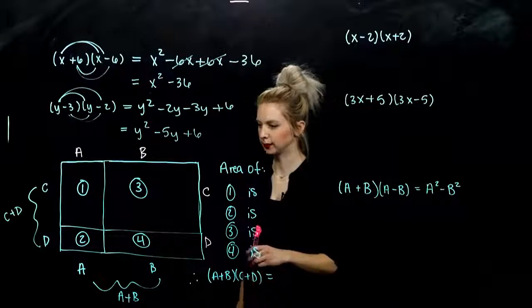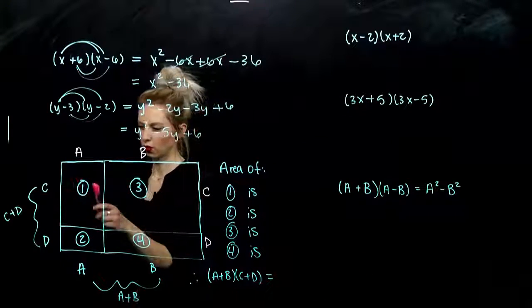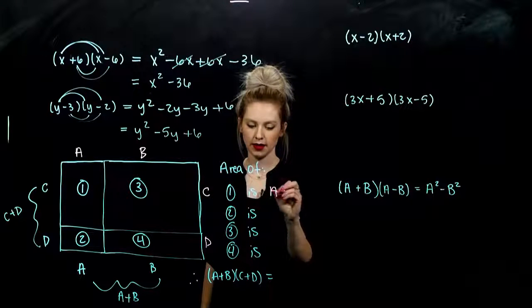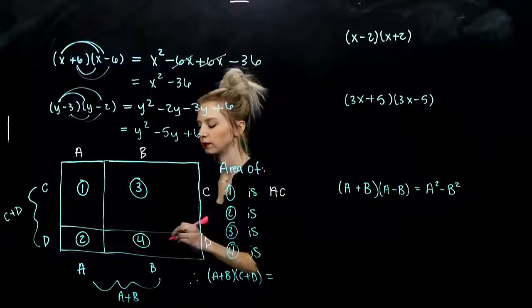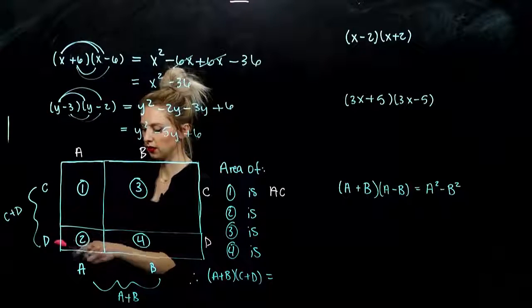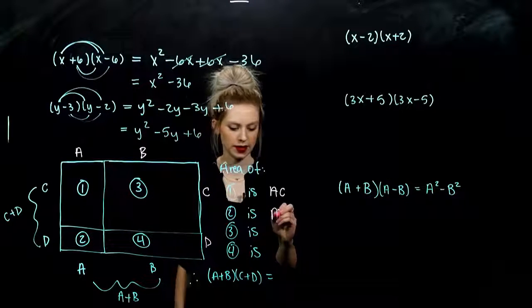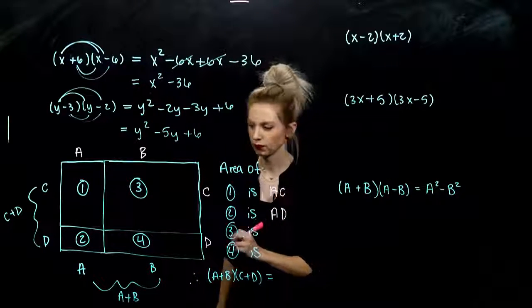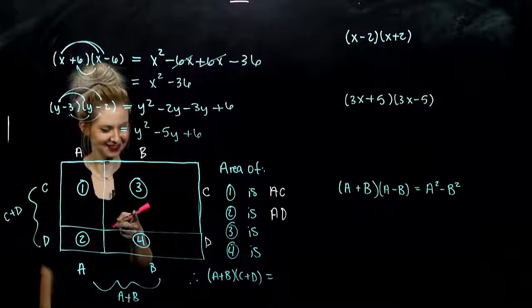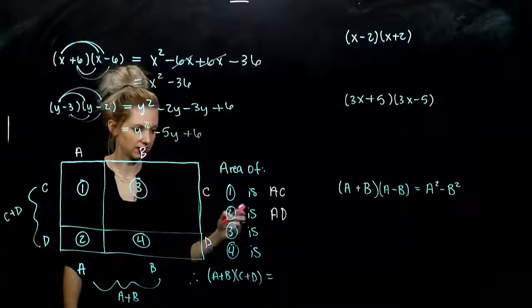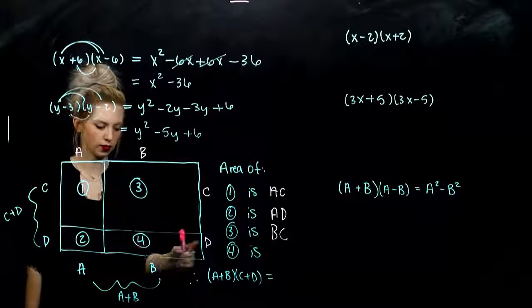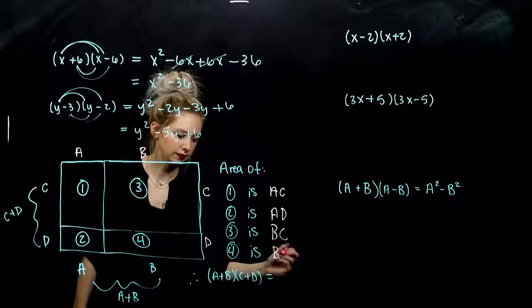So let's start to build. The area of part 1, area of the first rectangle, length times width is AC. For the second one, length A and width D, so A times D. For rectangle 3, length times width is BC. And the last one, rectangle 4, length times width, BD.